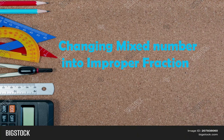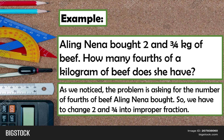Now vice versa — changing mixed numbers into improper fractions. Example: Aling Nena bought two and three-fourths kilograms of beef. How many fourths of a kilogram of beef does she have? The problem asks for the number of fourths, so we have to change two and three-fourths into an improper fraction.